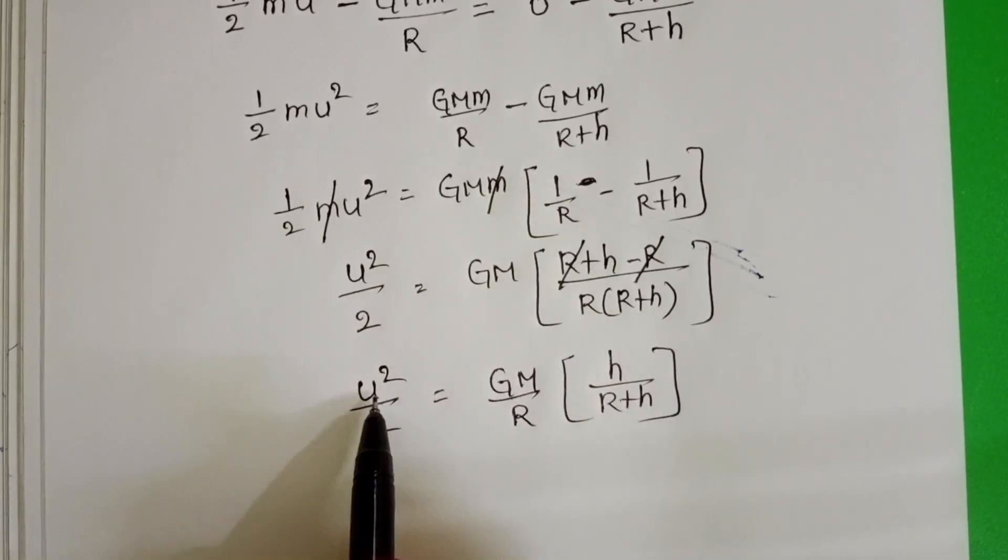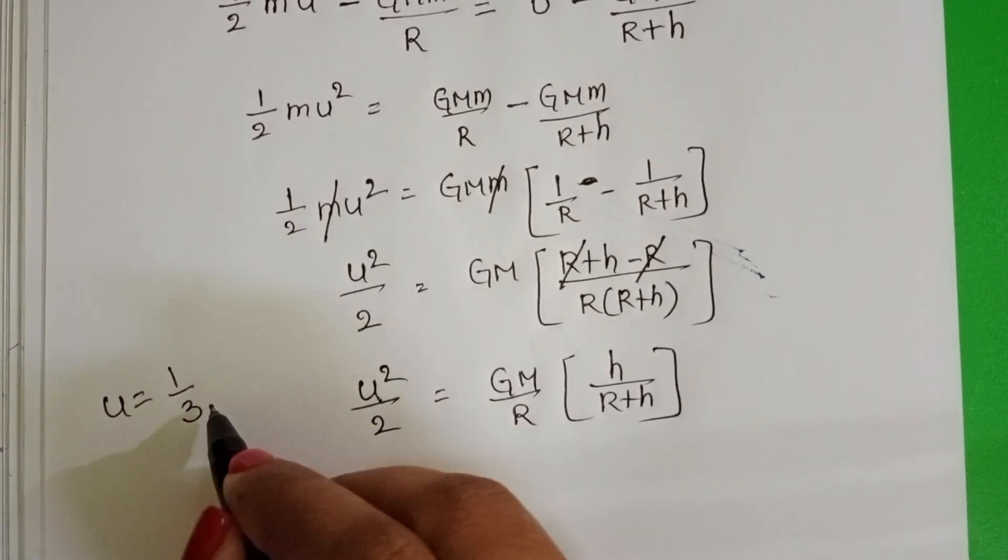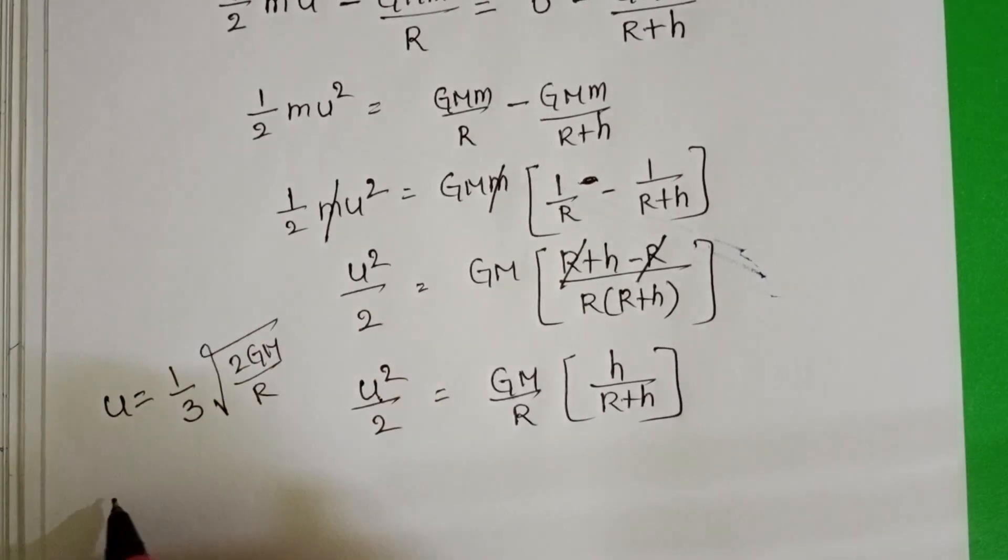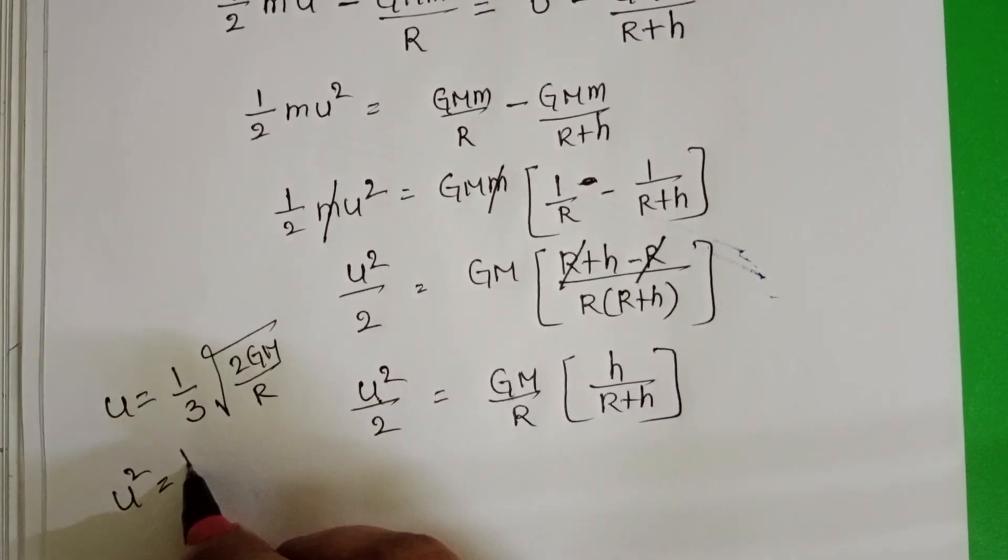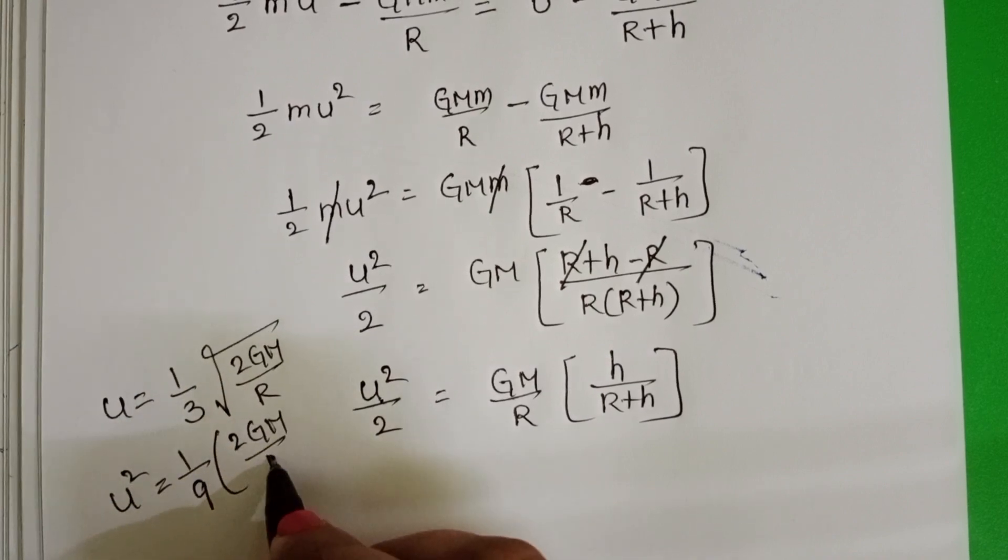Now we know the initial velocity u equals 1 by 3 into square root of 2GM by R. u square equals 1 by 9 into 2GM by R. Substitute here.